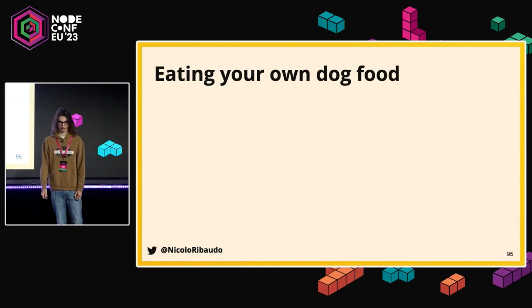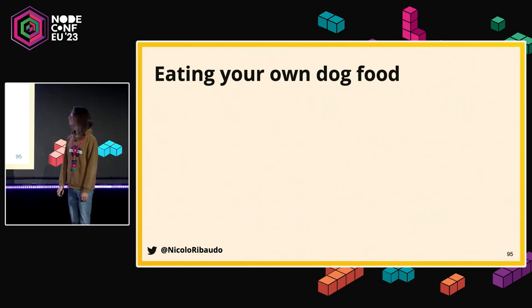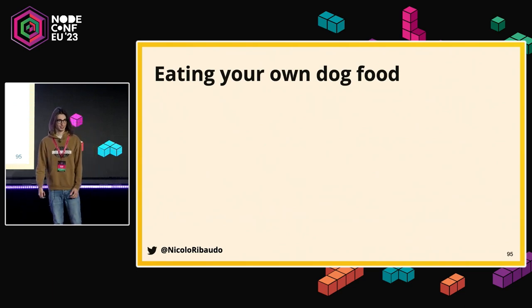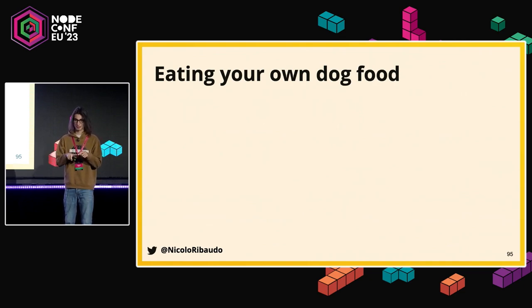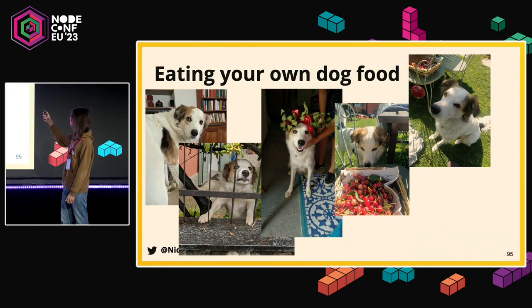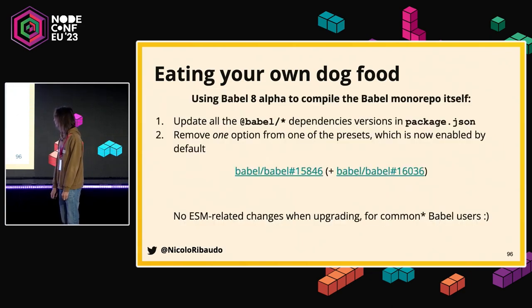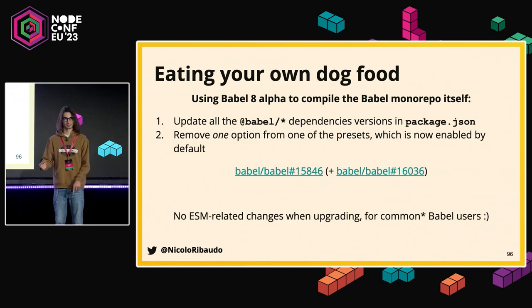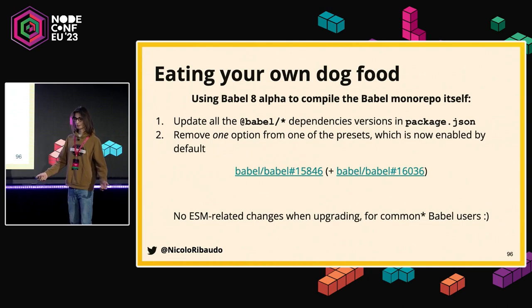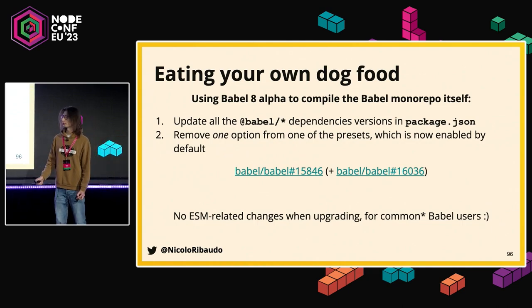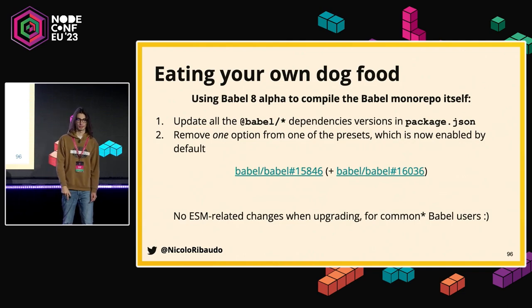Babel itself is compiled, making it a good project to dog-food our own tool. It's actually very interesting that we use Babel itself to build Babel — the challenge being that before Babel is built there is no Babel. It's complex but it works. So it was time to start building Babel using Babel 8 rather than Babel 7. We updated all the Babel dependencies in our package.json and the only change we had to make was removing one option from one of the process presets we were using, because it's now enabled by default.